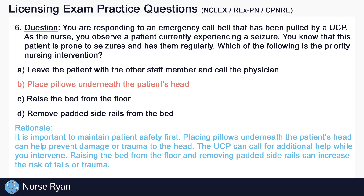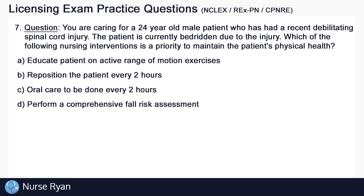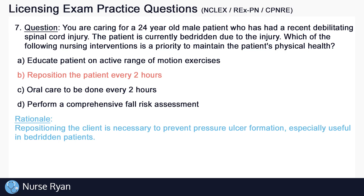Number seven: you are caring for a 24-year-old male patient who has had a recent debilitating spinal cord injury. The patient is currently bedridden due to the injury. Which of the following nursing interventions is a priority to maintain the patient's physical health? The answer is B — reposition the client every two hours. Repositioning the client is necessary to prevent pressure ulcer formation, especially important in bedridden patients.